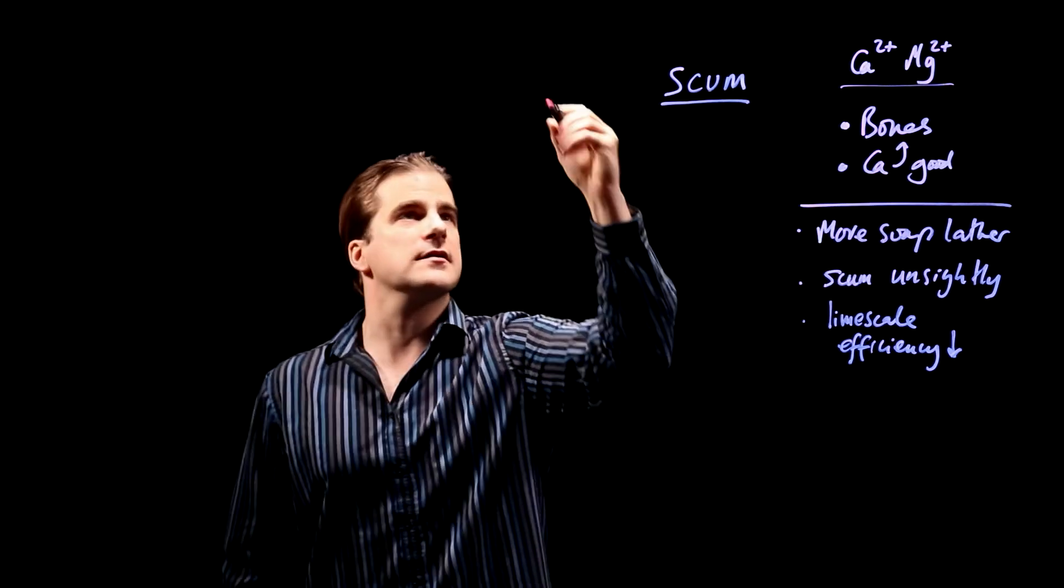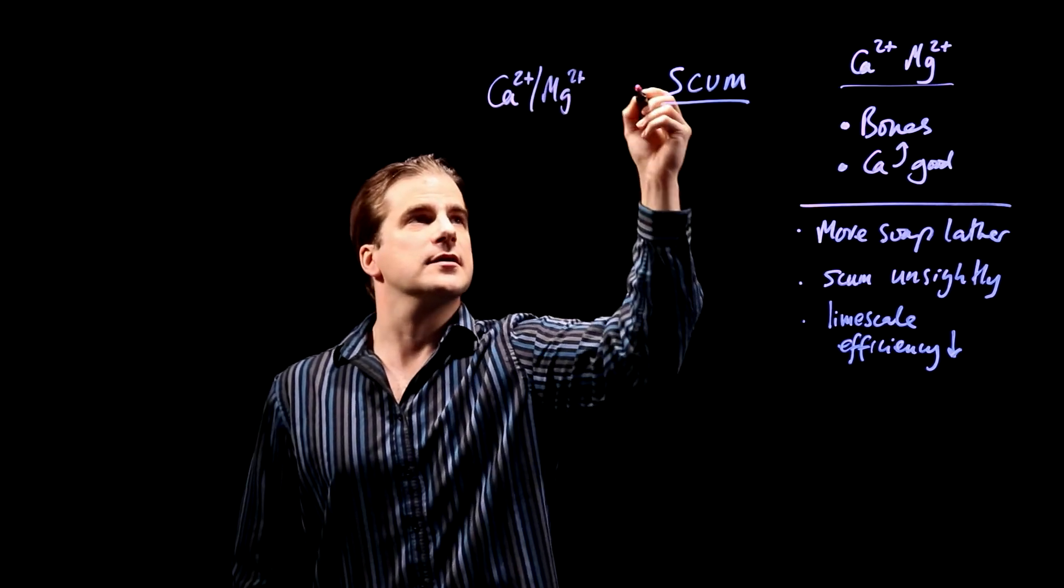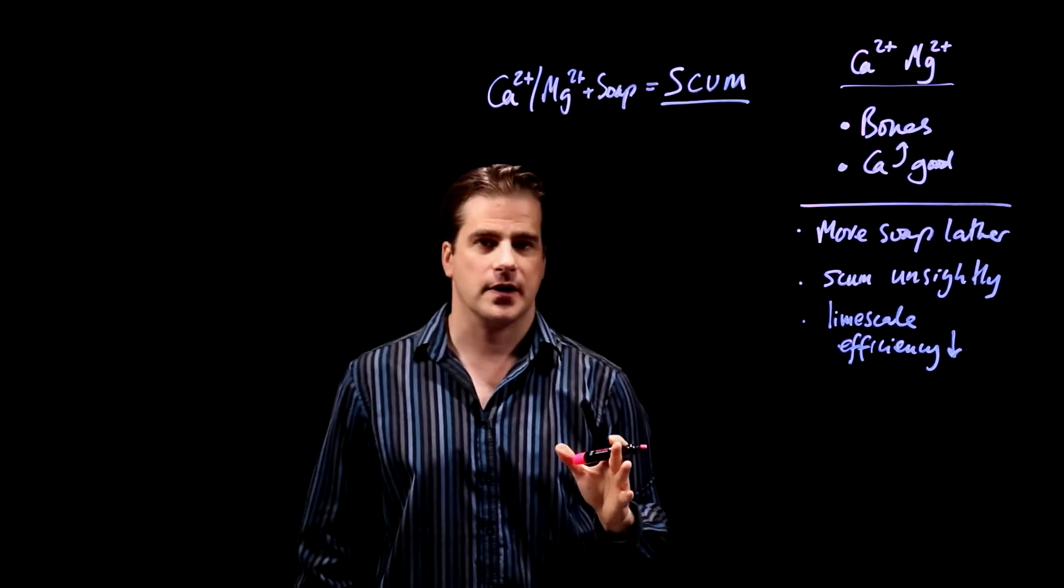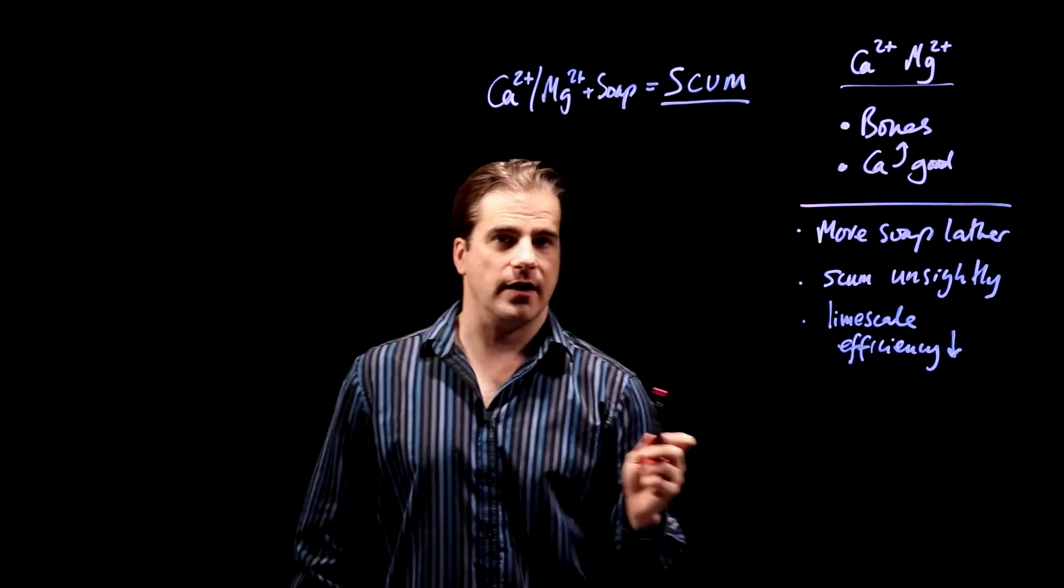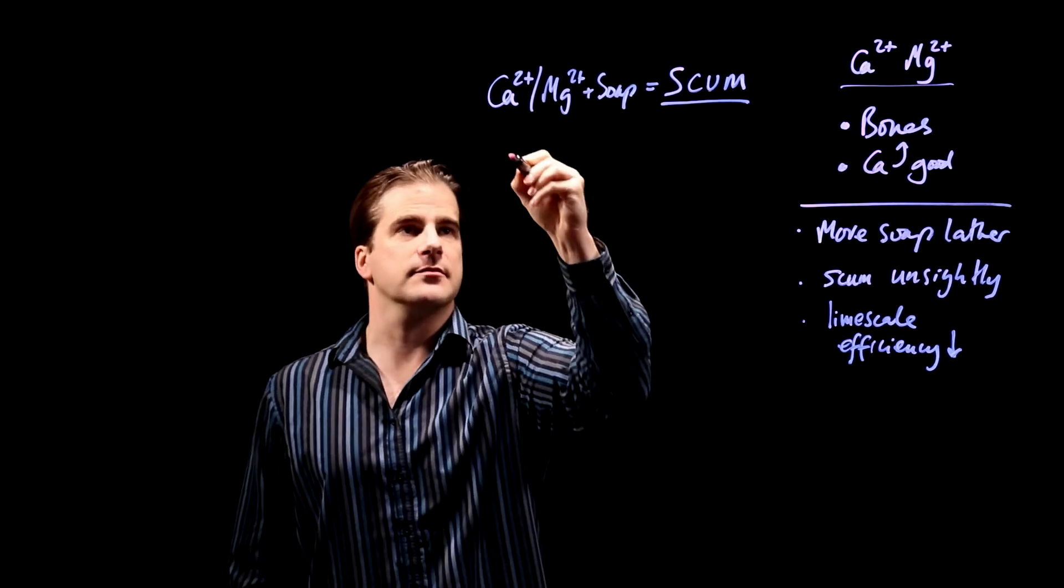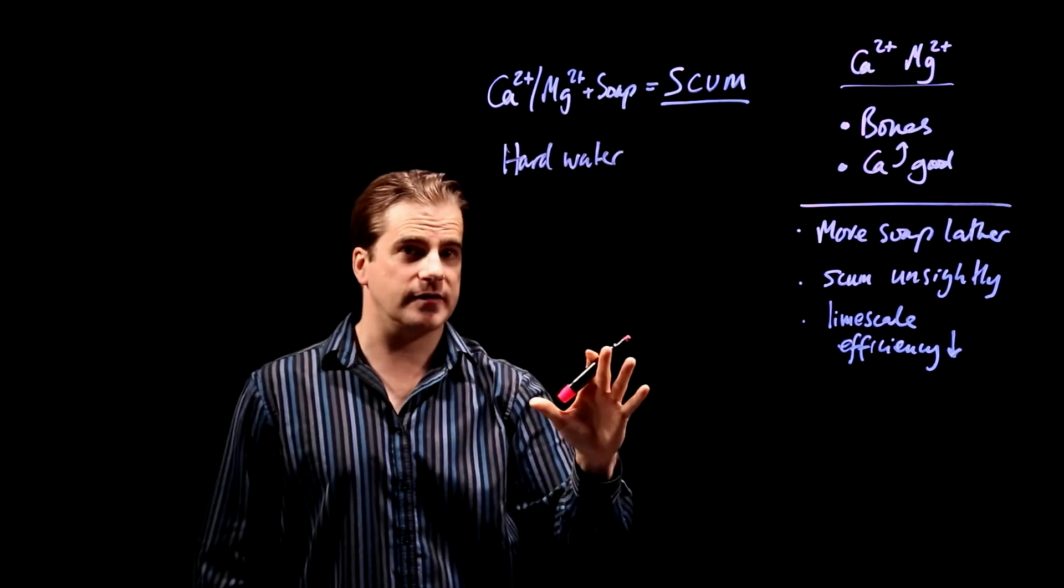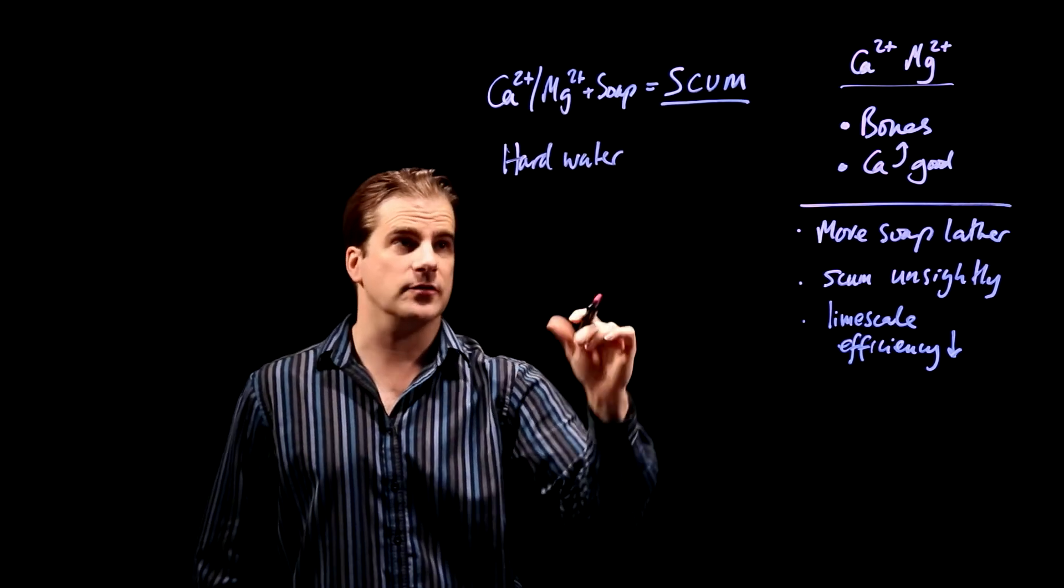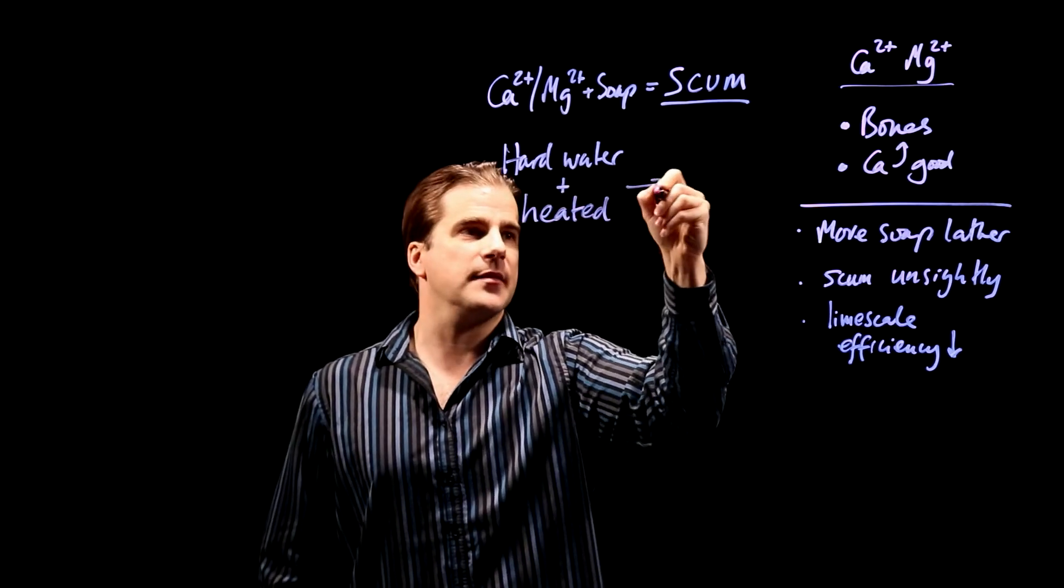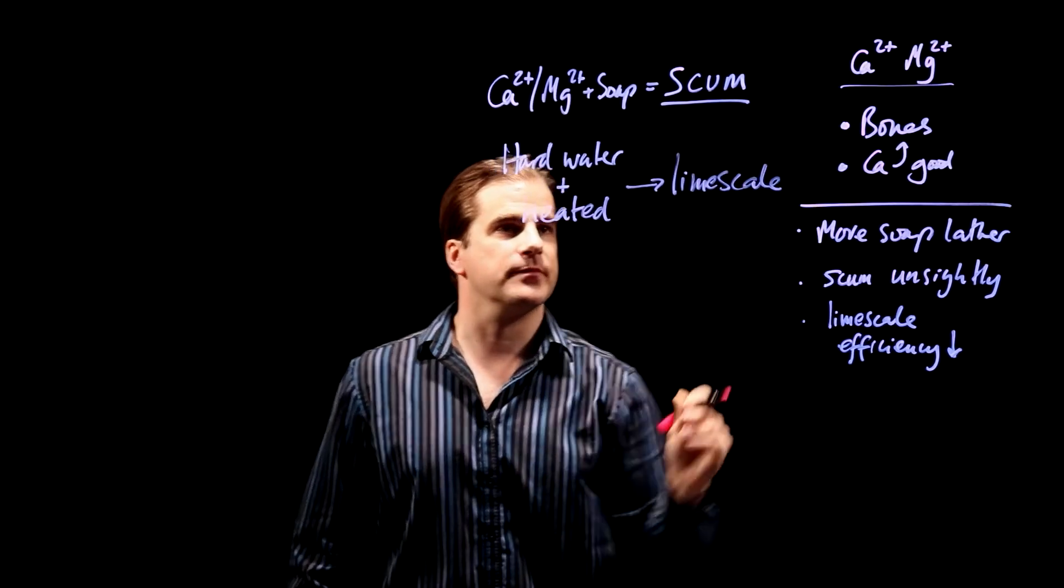Scum is formed when the hard water containing these ions reacts with soap. So calcium, magnesium, plus soap, equals scum. Limescale is formed when hard water is heated. So you don't need soap to make limescale. You just need to heat the water. When it's heated, that makes limescale. Don't mix the two up.